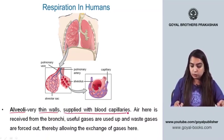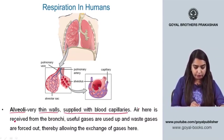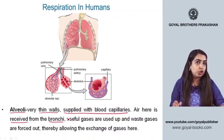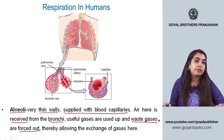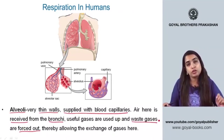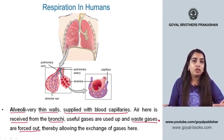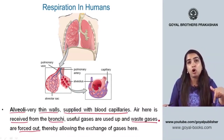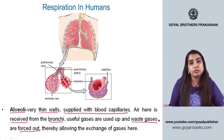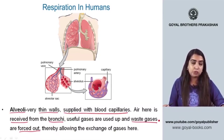Bronchioles end in air sacs called alveoli. The walls of alveoli are very thin and supplied with blood capillaries. Air received from the bronchi allows useful gases to be absorbed and waste gases to be expelled, facilitating gas exchange. Respiration is essentially the exchange of gases in the lungs, and the final exchange takes place in the alveoli.